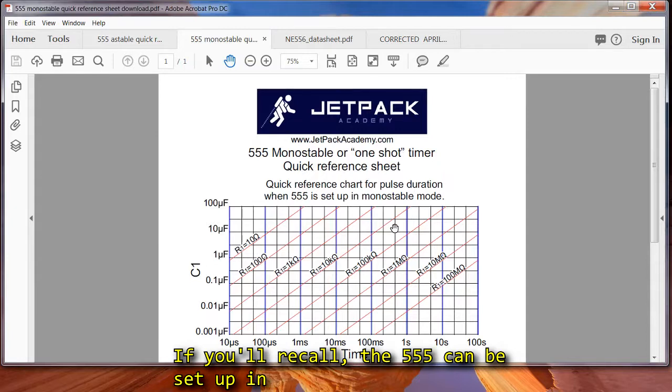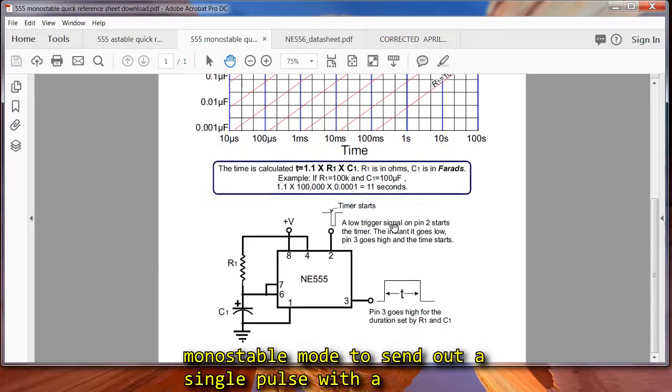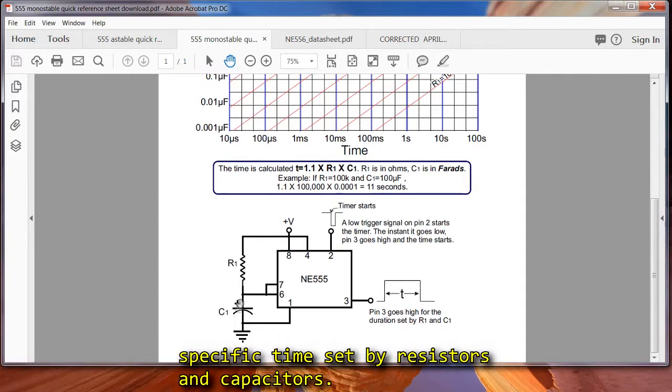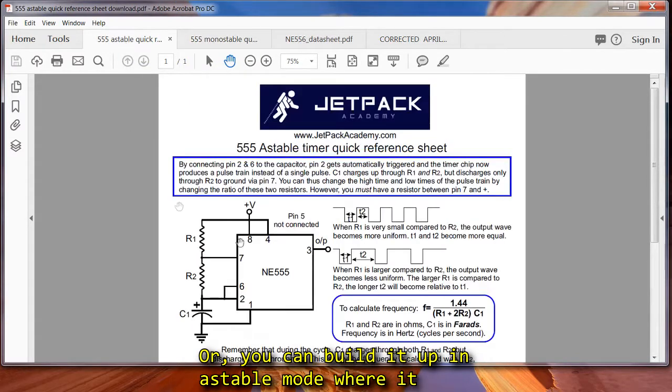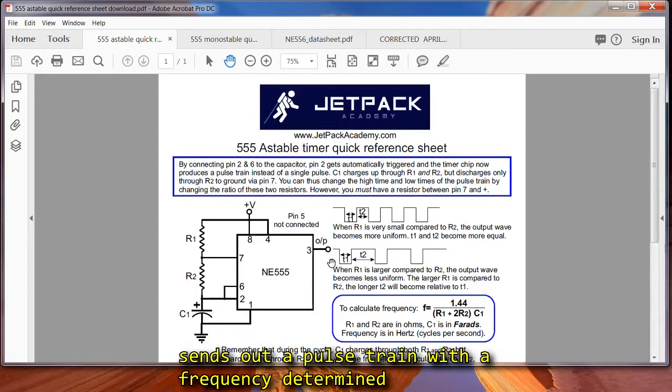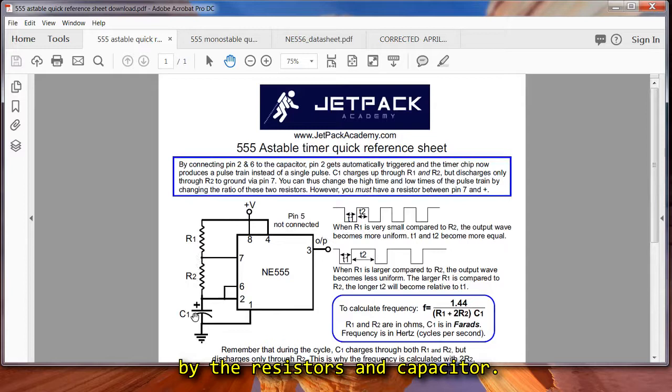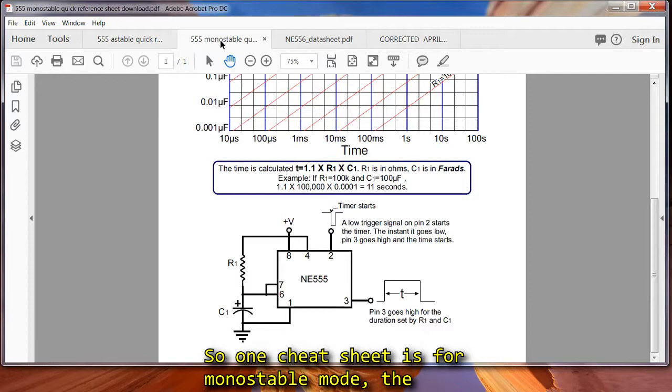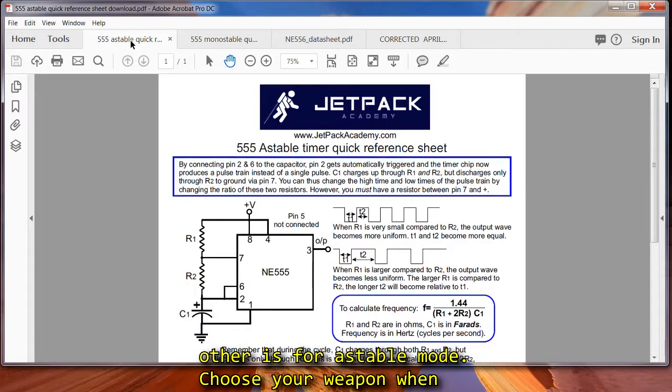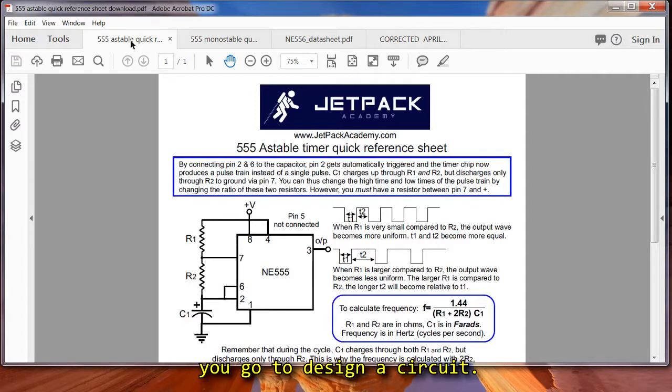Now if you recall, the 555 can be set up in monostable mode to send out a single pulse with a specific time set by the resistor and capacitors. Or you can build it up in astable mode, where it sends out a pulse train with a frequency determined by the resistors and capacitor. So one cheat sheet is for monostable mode, the other cheat sheet is for astable mode. Choose your weapon when you go to design a circuit.